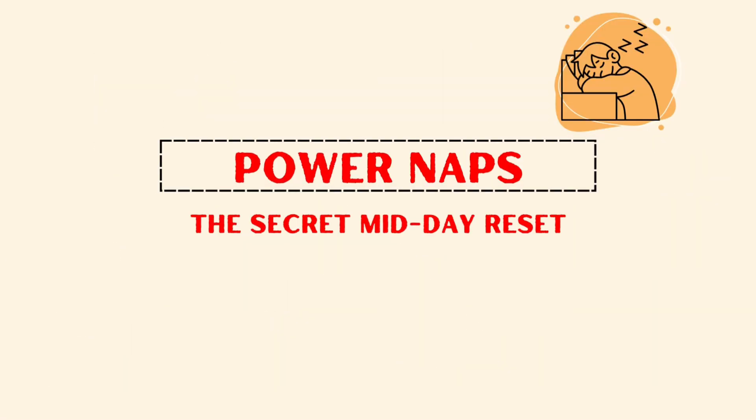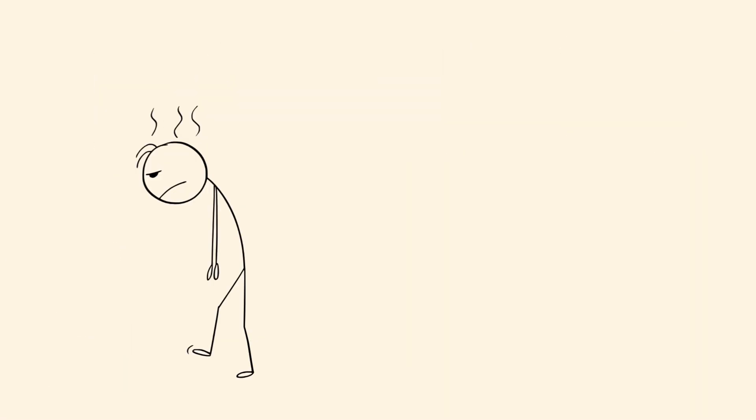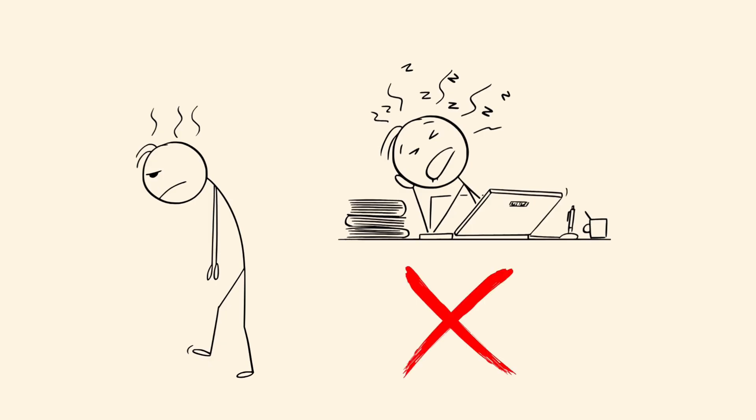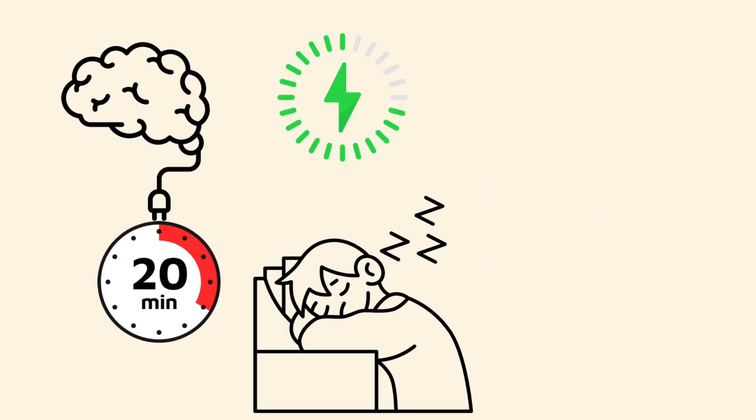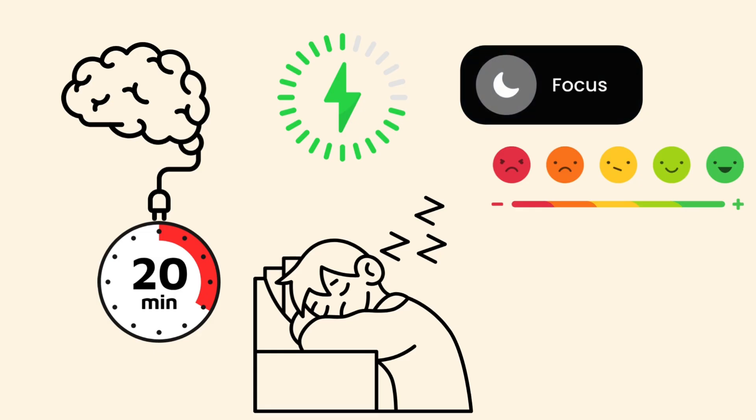Power naps. The secret midday reset. When afternoon fatigue hits, Ethan doesn't power through. He sets a 20-minute nap timer, recharging memory, focus, and mood instead of crashing and burning.